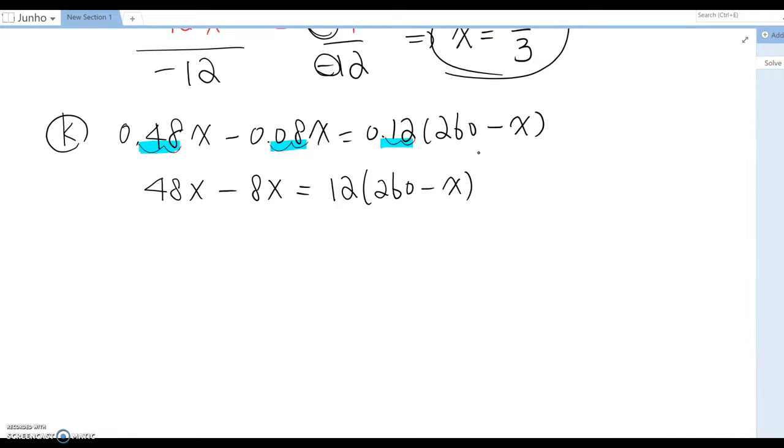Now combine the left term here, then it becomes 40x. And then the right side becomes 3120 minus 12x. Now we want to gather x terms together.